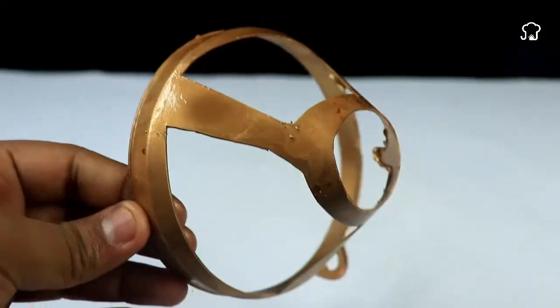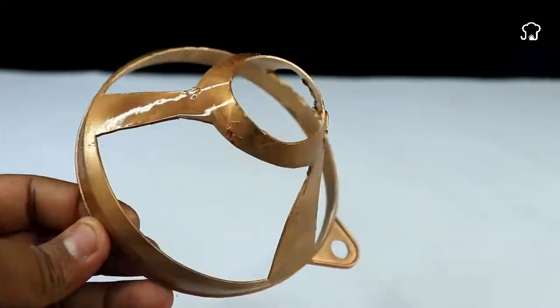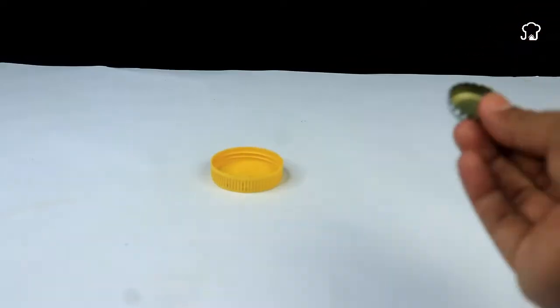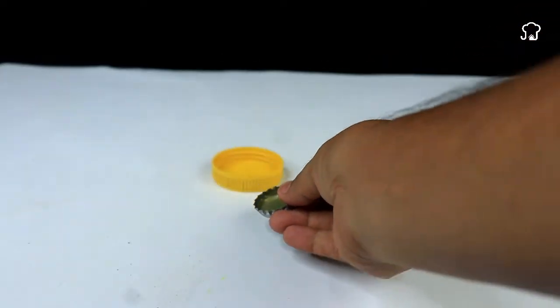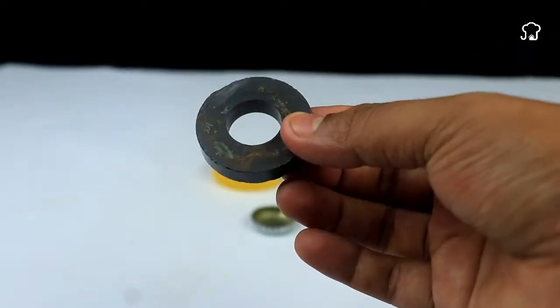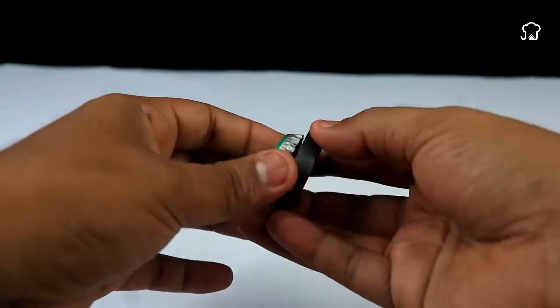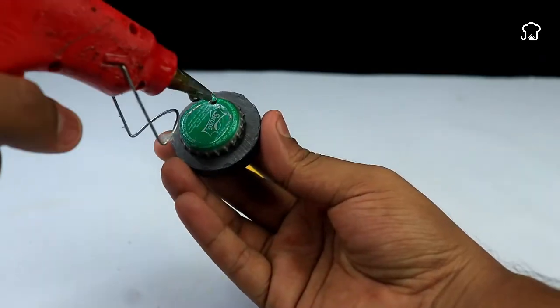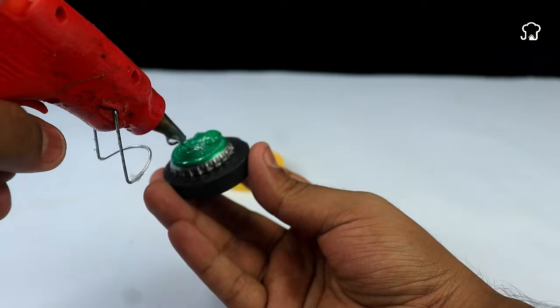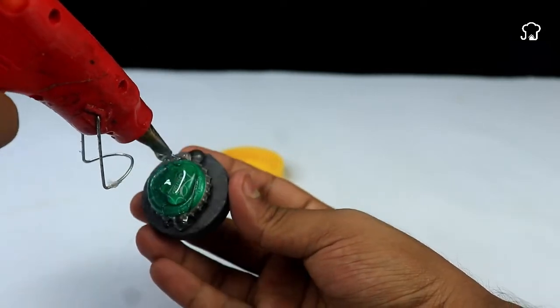We will take a plastic lid and a metal lid. With a magnet and hot silicone, we will fix the magnet in the center of the plastic lid, making sure that it is well adhered. Then, we glue the plastic lid with the magnet to the metal lid.